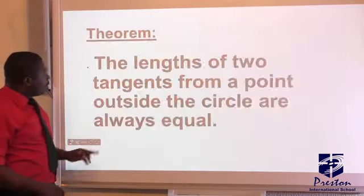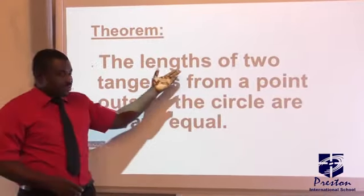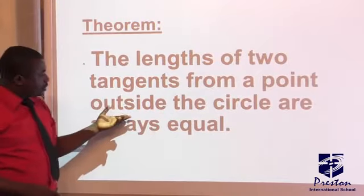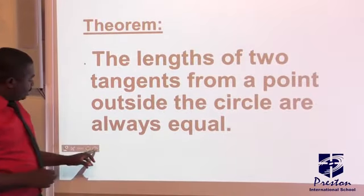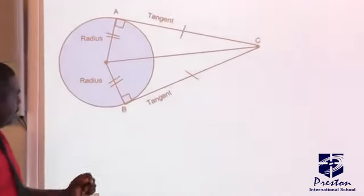So let's go to the theorem. The theorem we are going to look at today says the length of two tangents from a point outside the circle are always equal. So let's see that from the diagram. Look at this diagram.